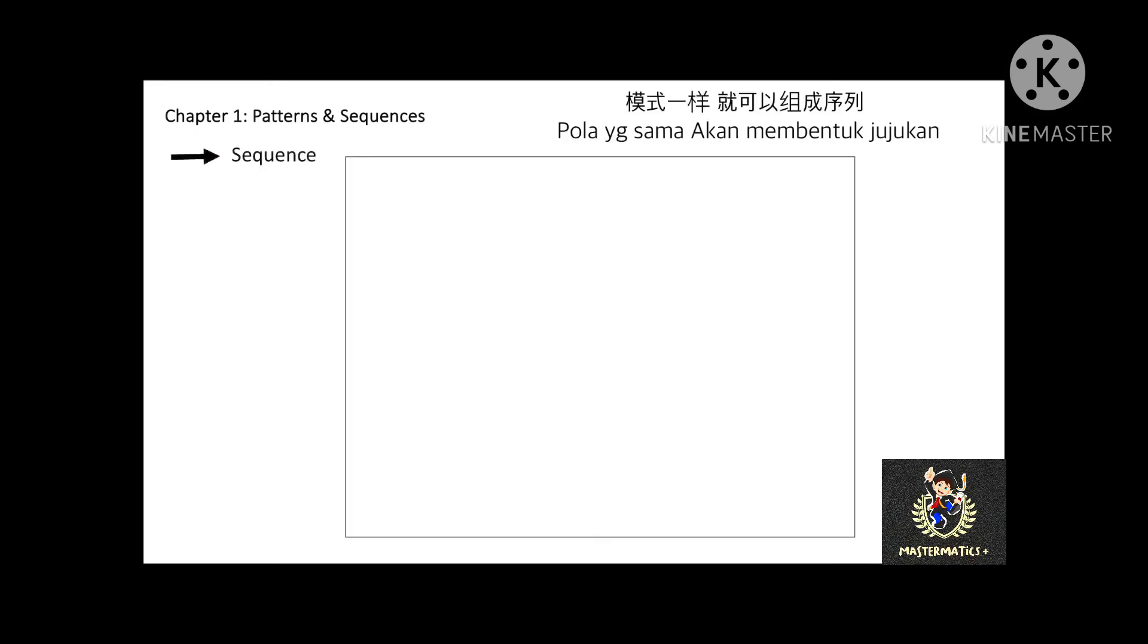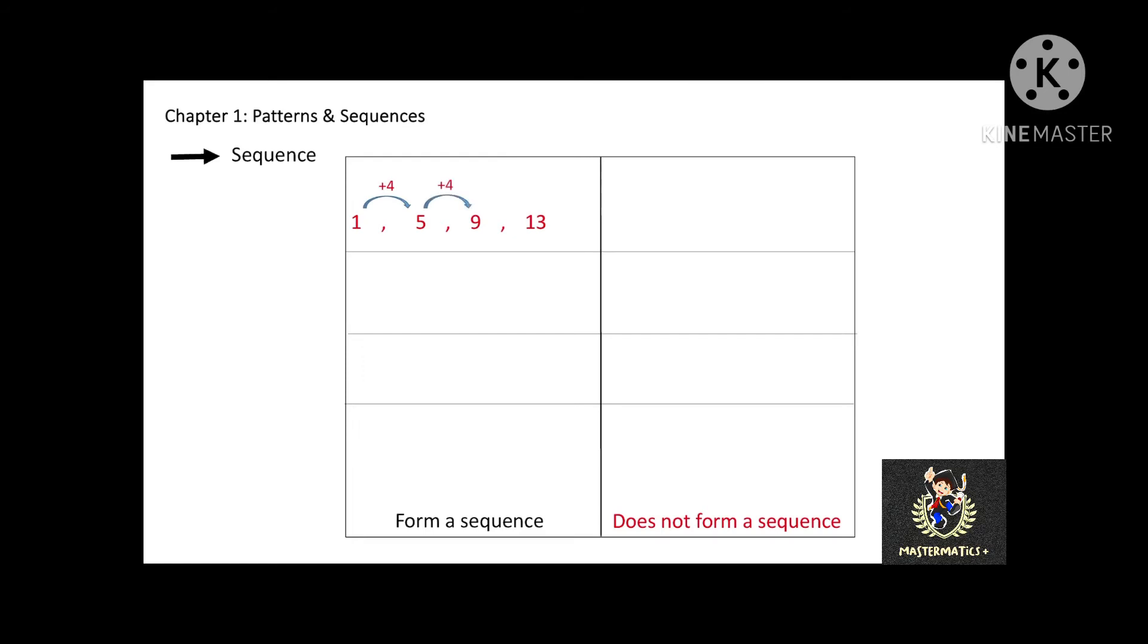Let's proceed to the next topic, sequence. If a set of numbers are arranged in a pattern, the set of numbers will form a sequence. Look at these three examples. The sets of numbers are arranged in a pattern. Therefore, they can form a sequence.